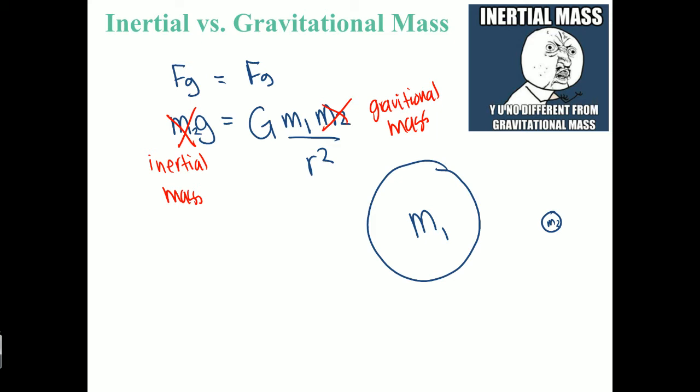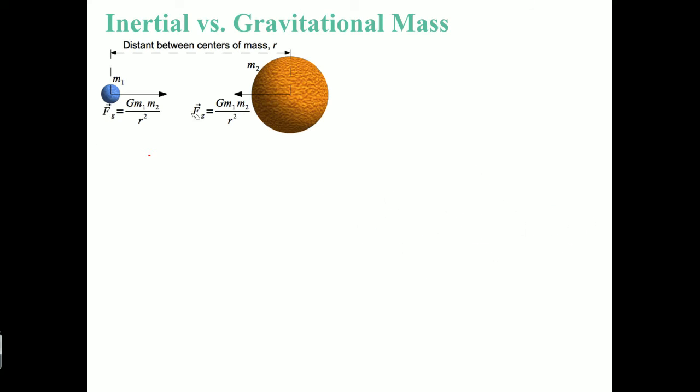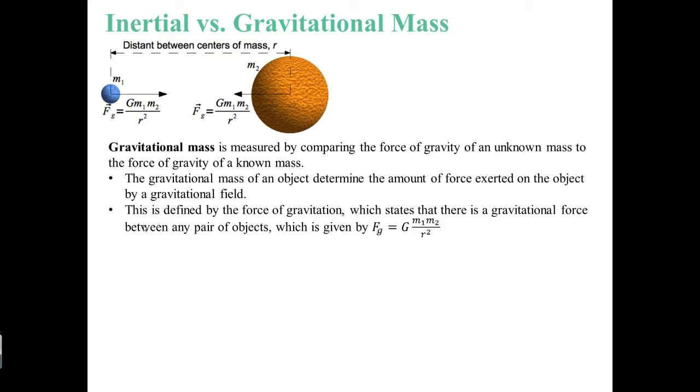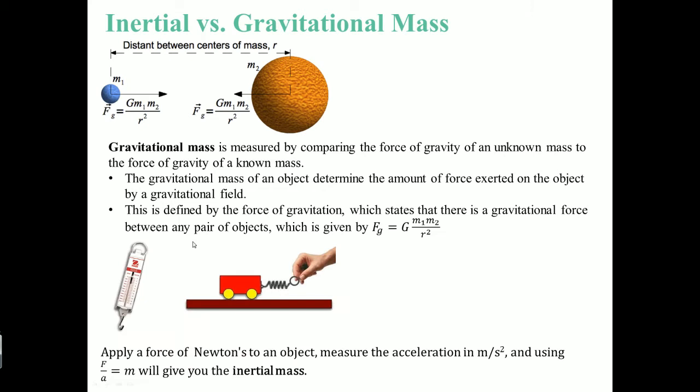This comes from Fg. The m here comes from the inertial mass. This is the gravitational mass. We could technically cancel this out. The gravitational mass is measured by comparing the force of gravity of an unknown mass to the force of gravity of a known mass. The gravitational mass of an object determines the amount of force exerted on the object by gravitational field. This is defined by the force of gravity of the gravitation, which states that there is a gravitational force between any pair of objects, which is this formula: Fg equals G M1 M2 over R squared.